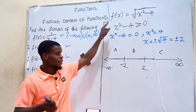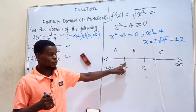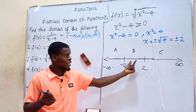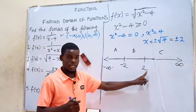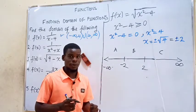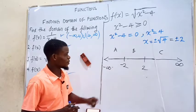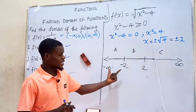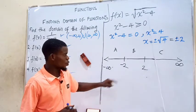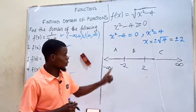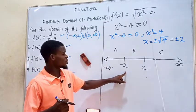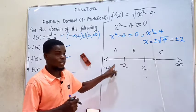If an interval satisfies the inequality, it will be included in our solution. We also test the boundary points negative 2 and positive 2 directly. To test interval A — from negative infinity to negative 2 — we choose a number from that interval. Let's choose negative 3, because negative 3 lies in that interval. We put negative 3 into the inequality.